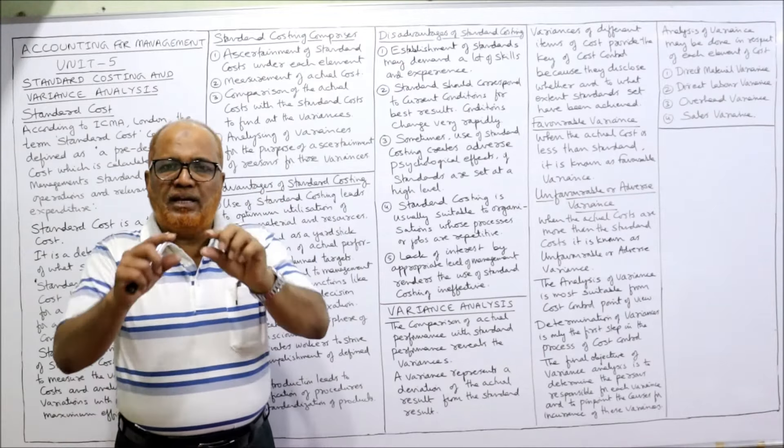Variances of different items of cost provide a key to cost control. The main purpose of standard costing is controlling the cost, and this variance analysis is the key to controlling cost because it discloses whether and to what extent the standards set have been achieved. Standard costing is therefore a part of the controlling technique.